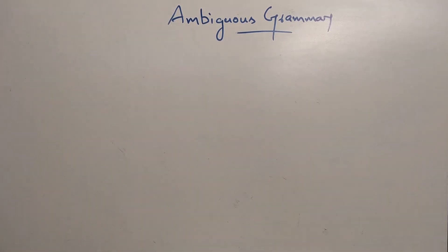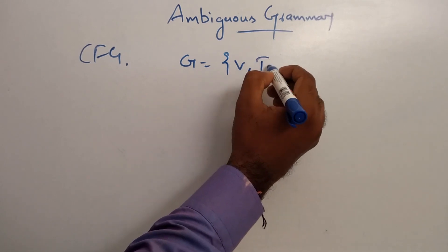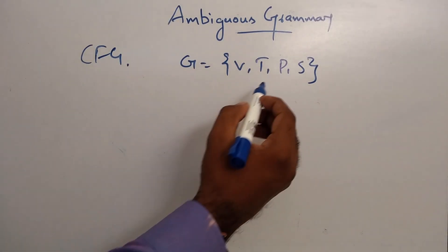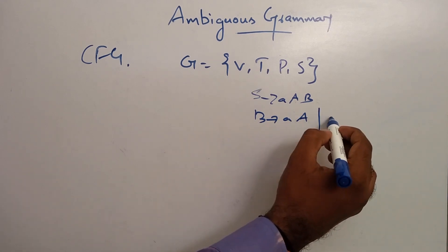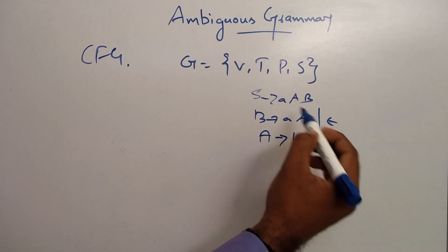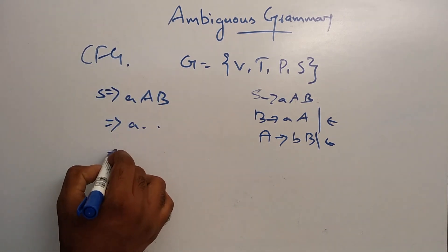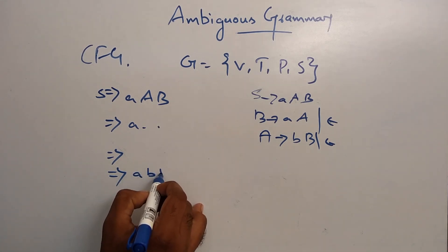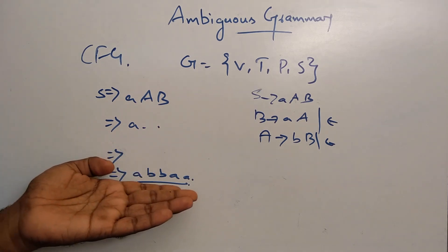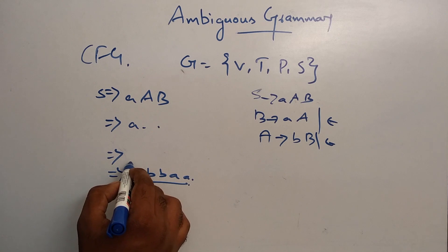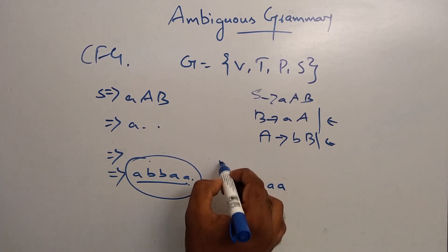So we will talk about context-free grammar. One grammar is defined as V, T, P, S. Productions are of the form A to B, something like that, or A tends to epsilon, A tends to B. We are making some derivations and finally we are getting a string — for example, A, B, B, A, A, A.